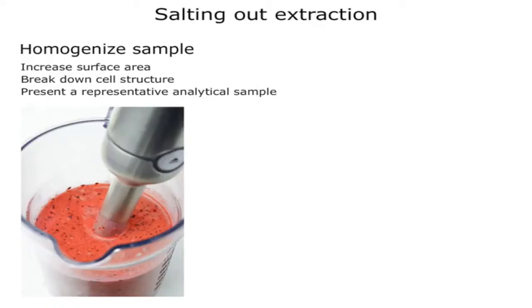The first step in a QuEChERS extraction is the salting out procedure. Only a small portion of the original sample weight will be used for the QuEChERS method. Therefore it is important that it is well homogenized to increase surface area which aids extraction, to break down cell structure, and to present a representative sample.